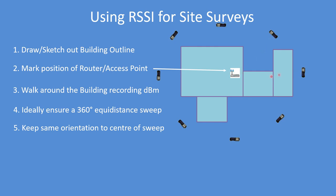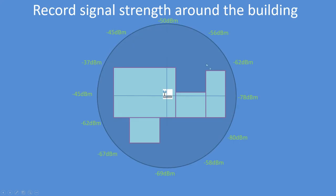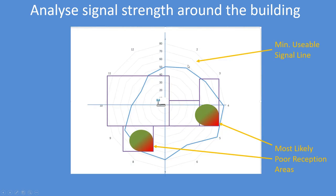It doesn't really matter how many points you record - the more the better. There are my results as I went round the property; they vary up and down. The goal is to get what's called a polar plot of the Wi-Fi coverage. I'm pointing out the minus 70 dBm line, which I consider to be the minimum usable signal, and anything outside that line - highlighted in red - is where you're most likely to get poor Wi-Fi coverage.